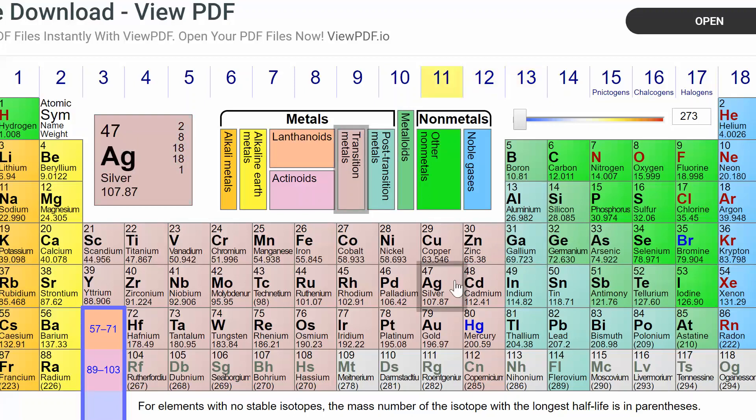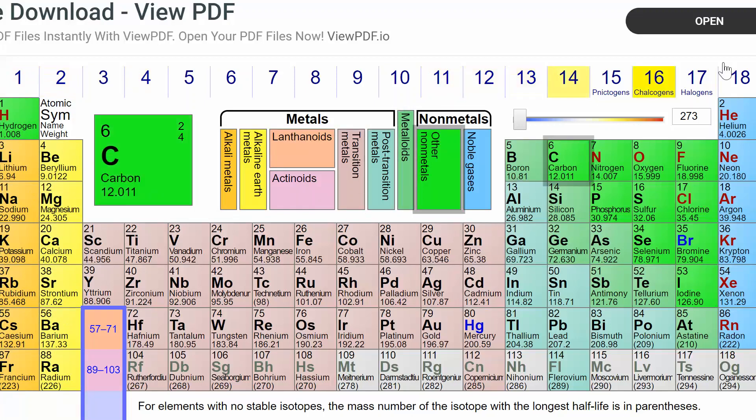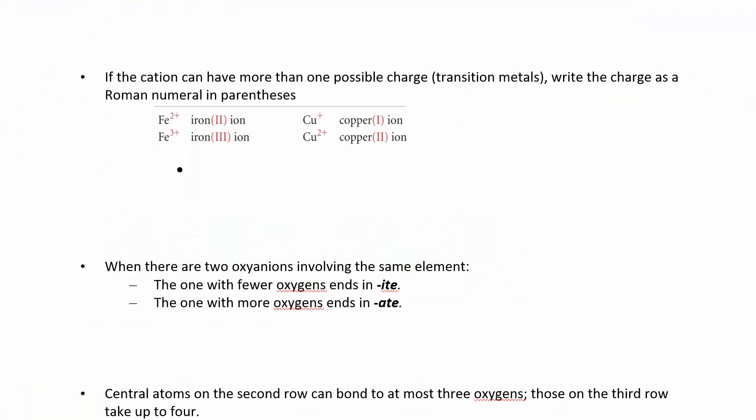you don't need to use Roman numerals. If you have a group 1 metal, these are always +1. These are always +2. These are always 1, 2, 3. You don't need to indicate what type of metal you have because there's only one type. You're only gonna have one.